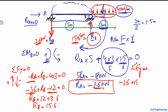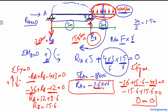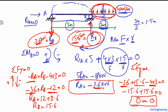To verify, we check that all vertical forces sum to zero: −3.6 (RA downward) + 15.6 (RB upward) − 12 (UDL downward) = 0, which gives 15.6 − 15.6 = 0. This confirms that the calculated support reactions are correct.